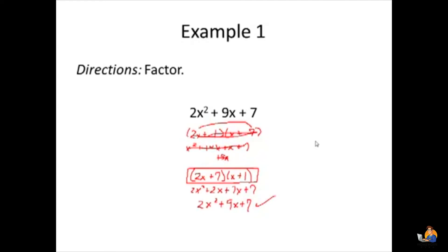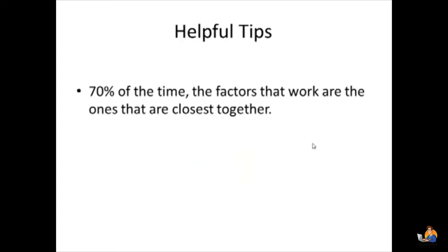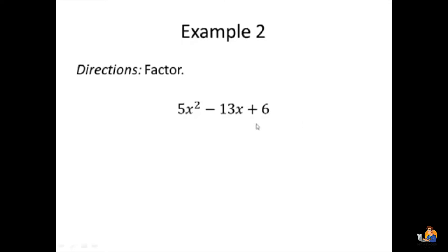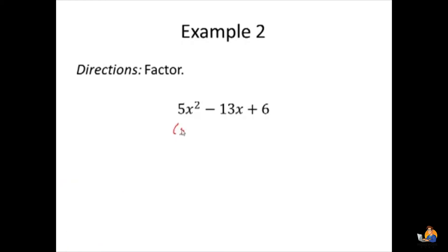That's why we call this a trial and error method — we're just trying to find it. A helpful tip: 70% of the time, the factors that work are the ones closest together. For example, with 5x squared minus 13x plus 6, the factors of 6 are 1 and 6, or 2 and 3. Since 2 and 3 are closer together than 1 and 6, let's try those first. They're not always right, but it's a good starting point.